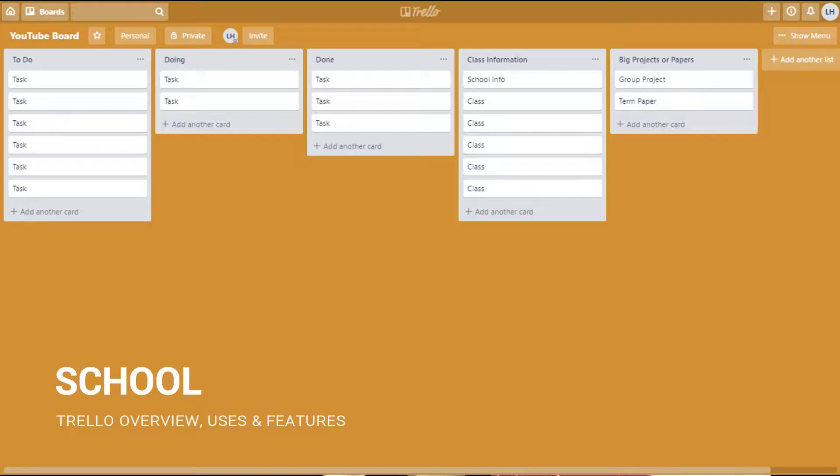School. So this is another hybrid board with to-do, doing, and done lists for specific homework or reading assignments. But also there is a list containing notes for each class and other pertinent school information. In addition, you might have a list for big projects or term papers to split those ongoing tasks out from everyday work.